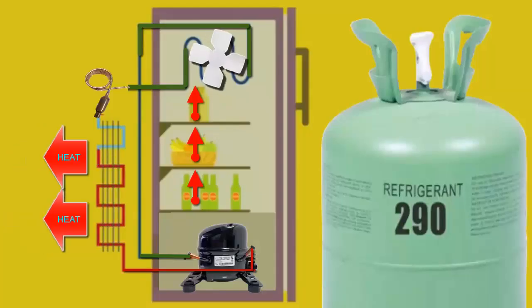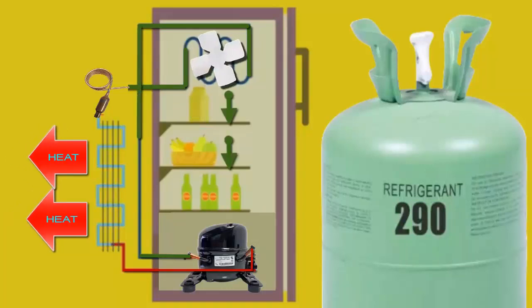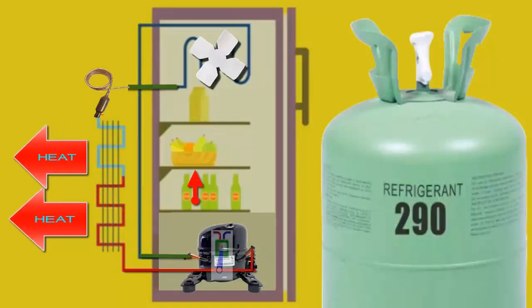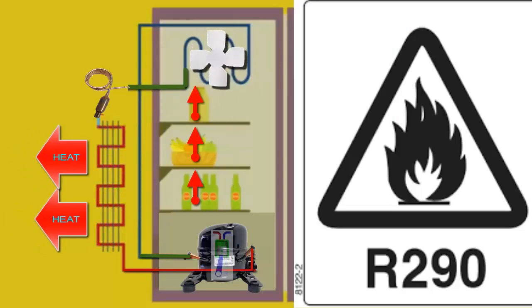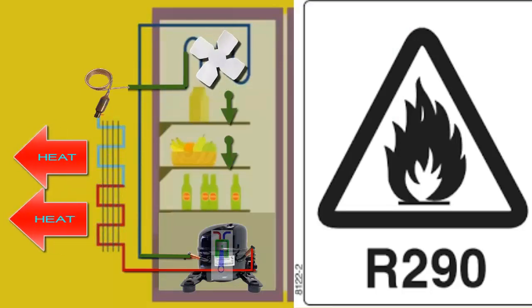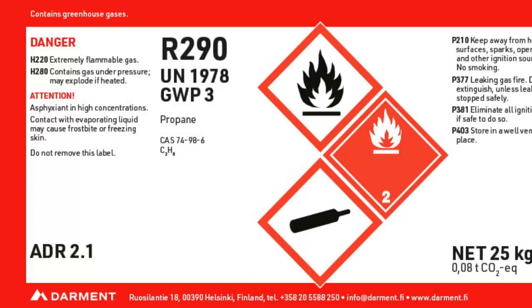The main drawback of R290 is its classification as a flammable refrigerant. However, since the refrigeration equipment where it is used does not have such high refrigeration capacities, and R290 has notable cooling capacity, small commercial equipment requires very little R290 refrigerant, reducing the risk significantly.